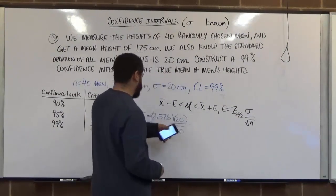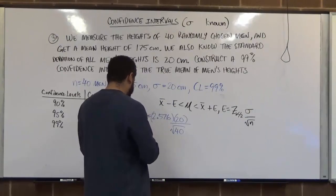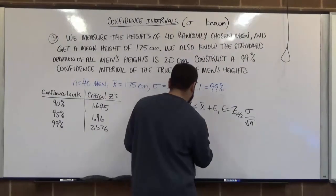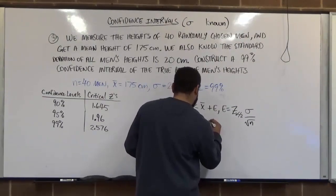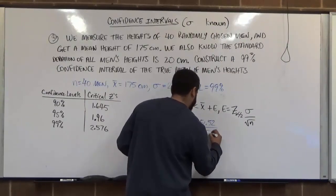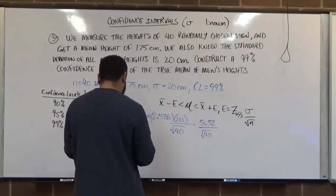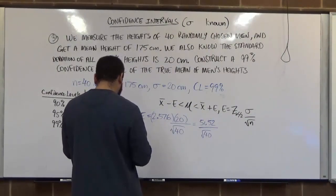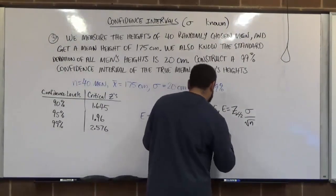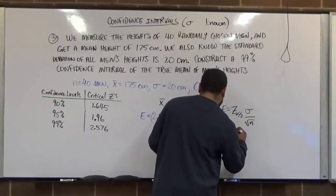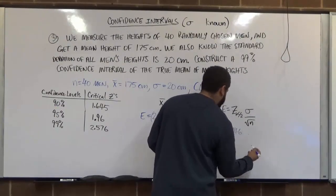Now, here we're going to multiply the tops together. So we have 2.576 times 20, and that's going to give us 51.52 divided by the square root of 40. And dividing that by the square root of 40, we have 8.146, and this continues on and on.